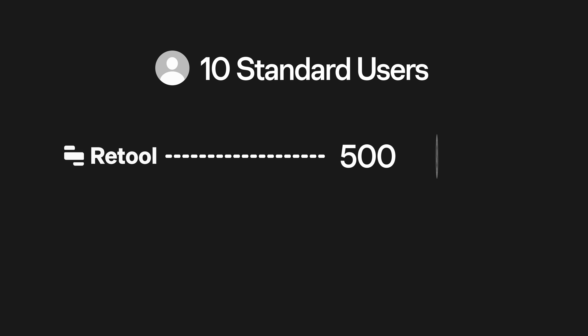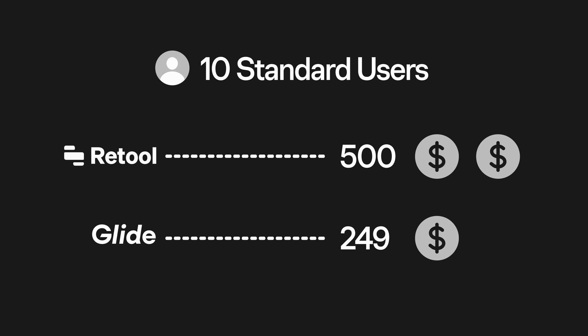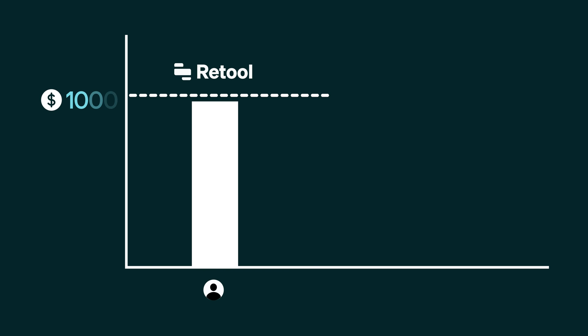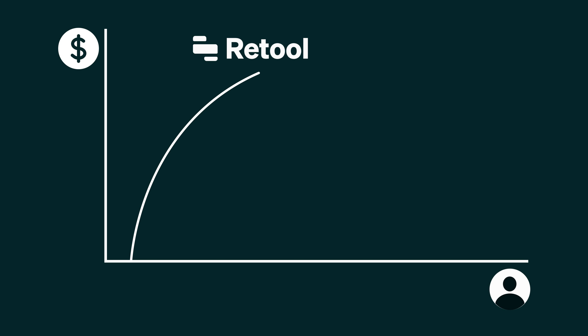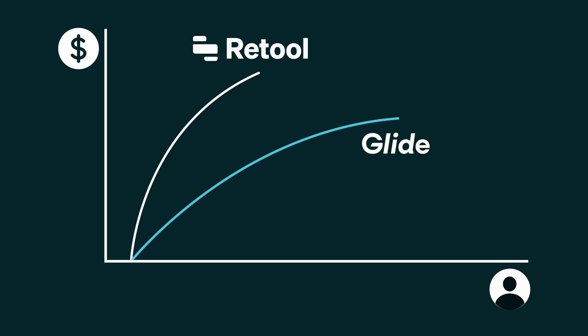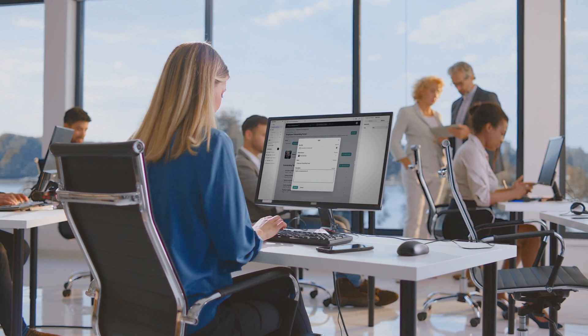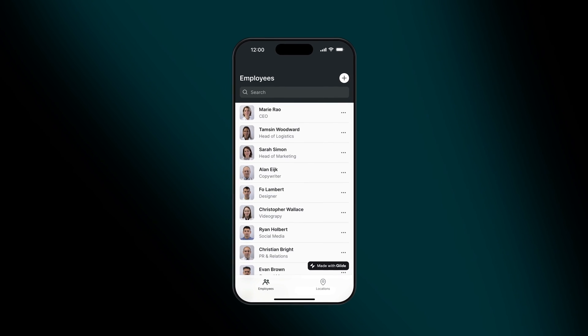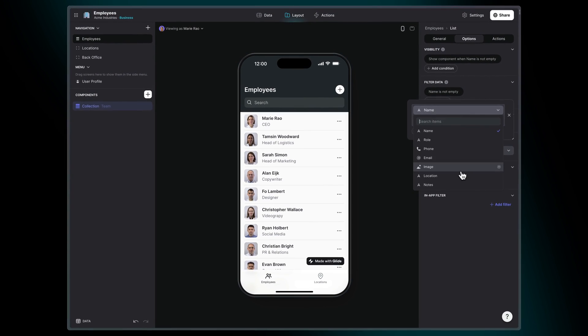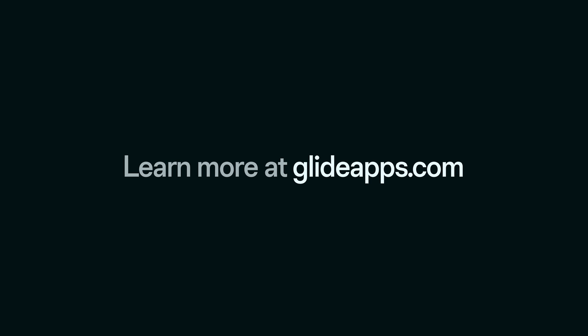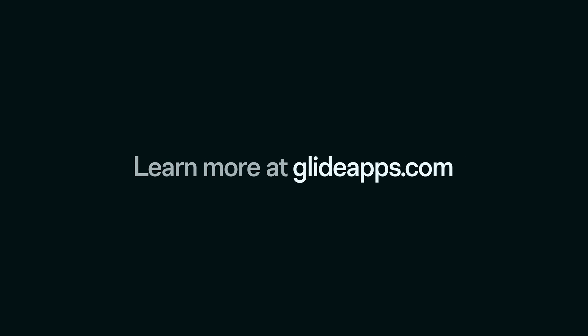With just 10 standard users, Retool is twice as expensive as Glide at $500. At 20 standard users, you're spending $1,000 on Retool, while on Glide you haven't even exceeded your included users yet. While the initial sticker price of a Retool app appears smaller, costs balloon quickly. Glide's pricing is significantly more competitive at scale. When you build software with Glide, you empower more of your team to create the tools they need and eliminate engineering bottlenecks. If your focus is on developing efficient workflows supported by reliable custom software that anyone on your team can create, Glide is the ideal platform for you. Start for free at GlideApps.com and start building software that truly fits your business needs.